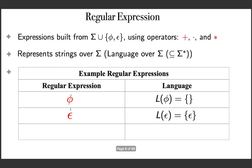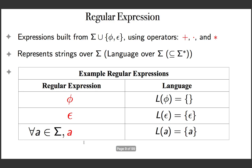Look at the basic set of regular expressions. Phi is a regular expression by definition, representing the language empty set. If you remember, every subset of sigma-star is a language, so null set is again a language represented by phi. The second basic regular expression is epsilon, representing the language containing only the empty string — these are two different languages. And for every alphabet A, the alphabet itself is a regular expression representing the language set {A}.